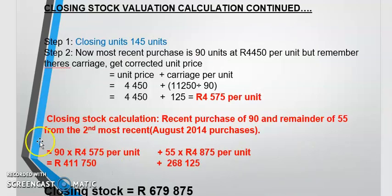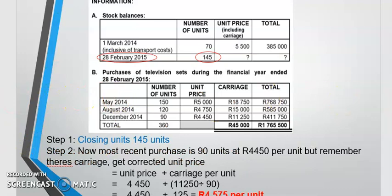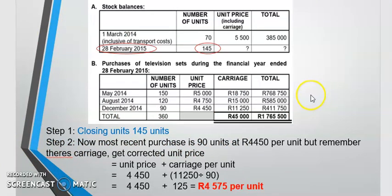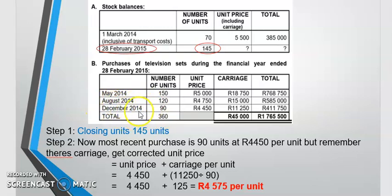They want you to value the stock according to the first in first out method. First and foremost: what is my closing stock units? Looking at end of year — beginning to end of the year, 145 units. That is step one. The next step is to now value the stock using first in first out — value it according to the most recent purchase. May is early in the year, August is later, December is the most recent purchase.